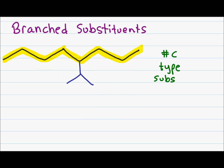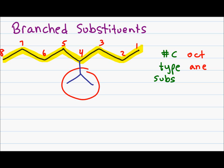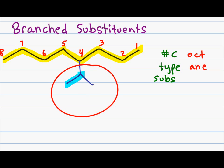Let's name this molecule. I number starting from the right because that gives me the lowest number for my substituent. I have eight carbons giving me oct, and only single bonds making it ane. For the substituent: I start at the carbon attached to the parent chain and find the longest continuous chain coming off of it. I have one carbon on either side so it doesn't matter. Carbon one is always the carbon directly attached to the parent chain. I have an ethyl group, but on that ethyl group there is a methyl group coming off of carbon one, making this substituent a 1-methylethyl.